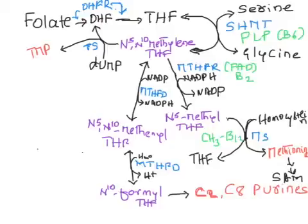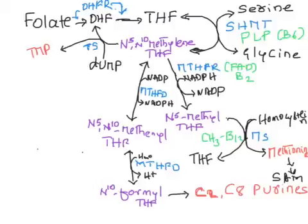To summarize the reactions of one carbon metabolism in the body: formation of thymidylate monophosphate (pyrimidine synthesis); formation of purines (C2 and C8 from N10-formyl THF); formation of methionine from homocysteine using vitamin B12 and N5-methyl THF; and synthesis of glycine via serine hydroxymethyl transferase, where THF is converted to N5,N10-methylene tetrahydrofolate.